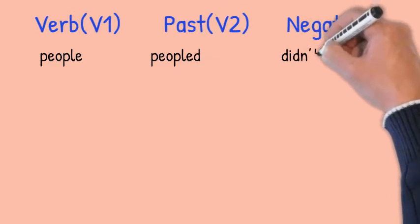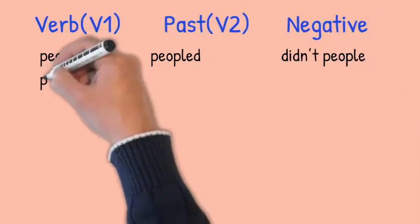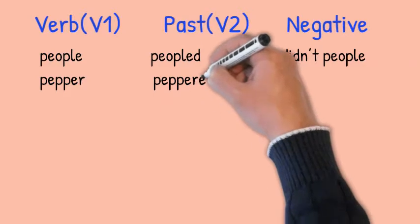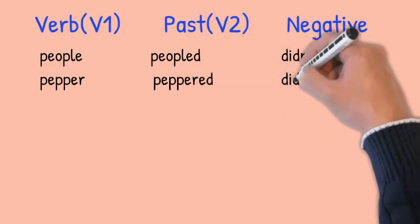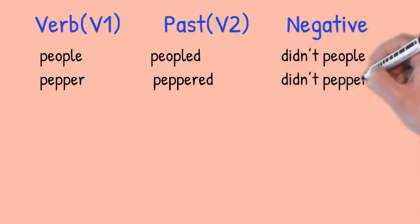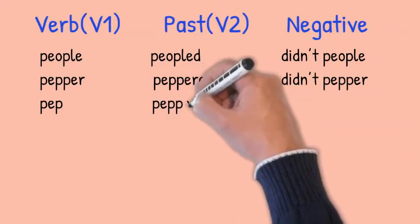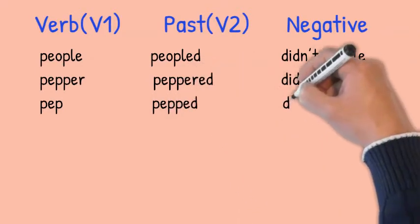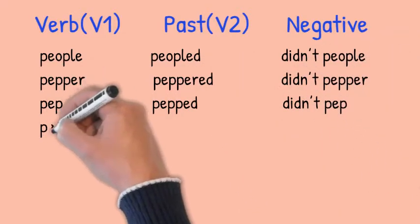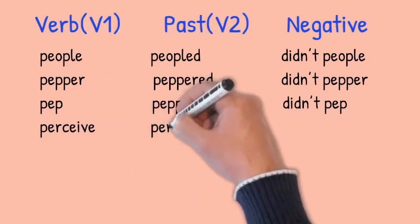People, peopled, didn't people. Pepper, peppered, didn't pepper. Pep, pepped, didn't pep. Perceive, perceived, didn't perceive.